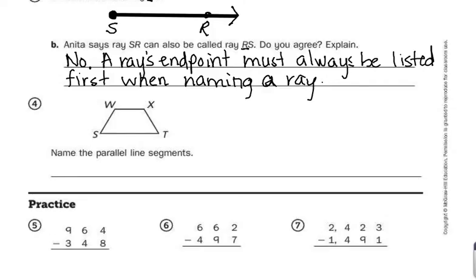Well, if I look parallel, two parallel lines are lines that never intersect. So if I look here, line segment SW, if I were to extend that line, and then I would extend line segment XT, they would eventually cross. Now if I would extend line segment WX and extend line segment ST, they would never cross.